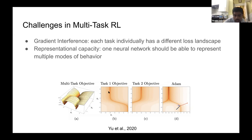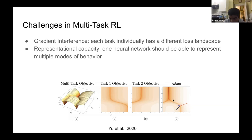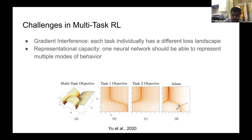This could be the loss landscape for task one, where the dark contours represent a valley you're trying to minimize. For task two, you have a different landscape. This is just a toy illustration — the dimensionality could be thousands or millions in reality.